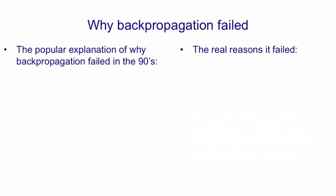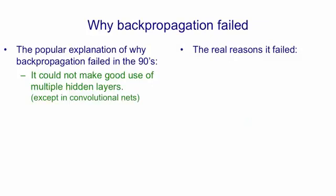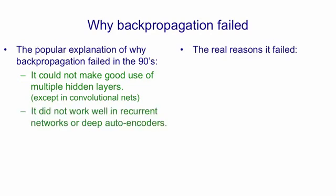The popular explanation of what happened to backpropagation in the late 90s was that it couldn't make use of multiple layers of non-linear features. This wasn't true in convolutional nets, which were the exception. But in general, people couldn't get feed-forward neural networks trained with backpropagation to do impressive things if they had multiple hidden layers, except for some toy examples. It also did not work well in recurrent networks or in deep auto-encoders. Recurrent networks were perhaps the place where it was most exciting, and so it was there that it was most disappointing that people couldn't make it work well.